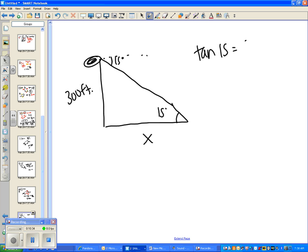So tan of 15 equals opposite over adjacent. Again, swap these two. And you could put x equals 300 over tan 15. Now some people don't like doing it that way. That's fine.